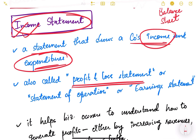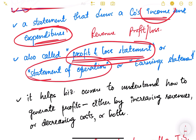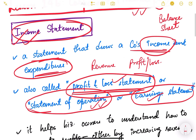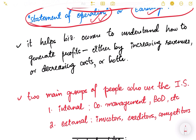The income statement shows the revenue of the company and whether the company is making any profit or loss - that's why it is also known as the profit and loss statement. It is also known as the statement of operations because it shows what revenue the company is making, what is the total cost of production, and the different expenditures on raw materials, manpower, labor cost, and interest payments. It is also known as the earnings statement.